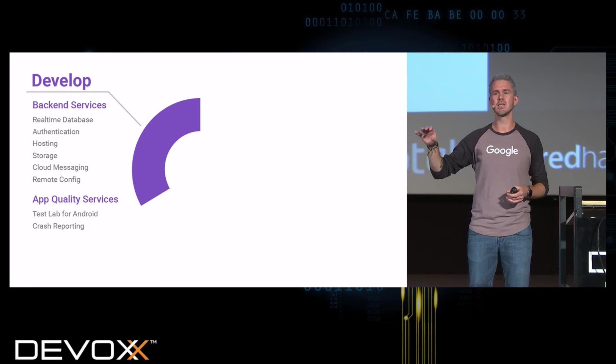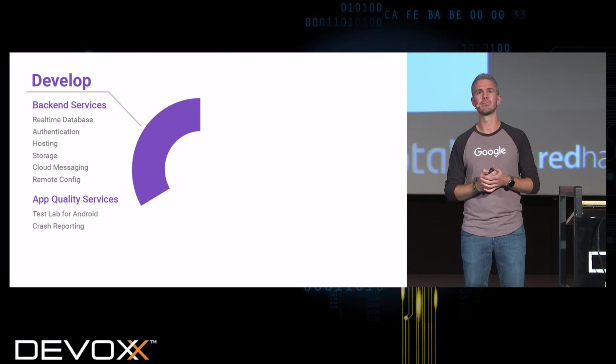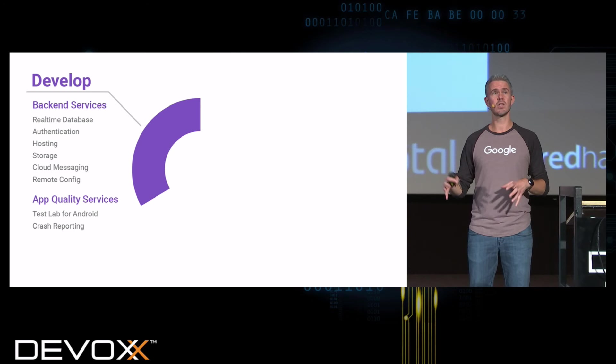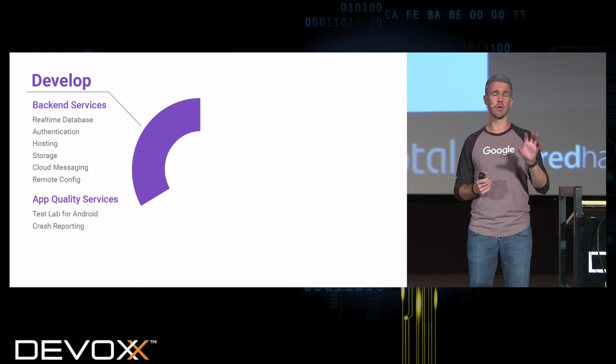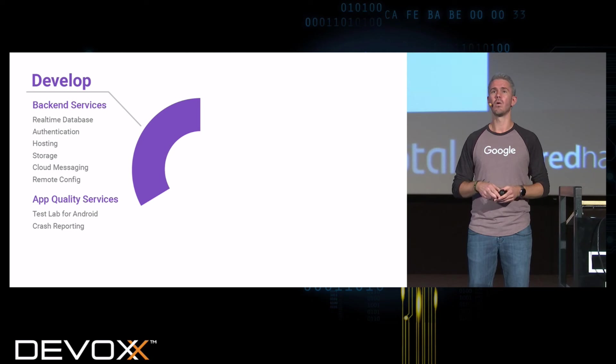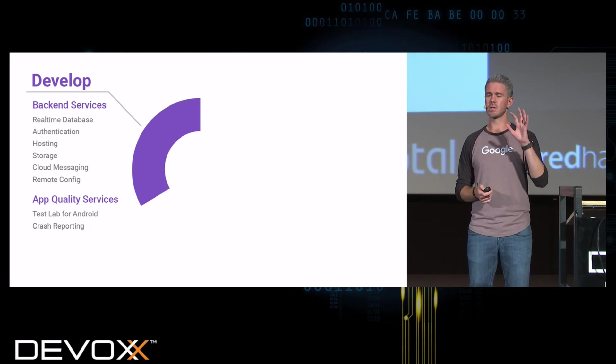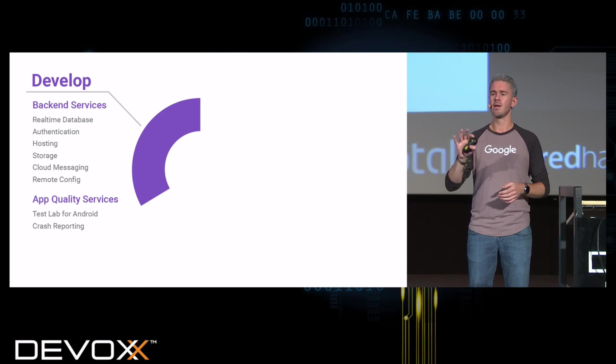The second thing is Firebase Authentication. This lets you easily authenticate your users with things like GitHub, Twitter, Google, Facebook, your own custom authentication system, username and password, or anonymous. Firebase makes it really, really easy. There's also Firebase Hosting, Firebase Storage for storing binary data, and Cloud Messaging for sending notifications to your web application or native notifications to your native apps.